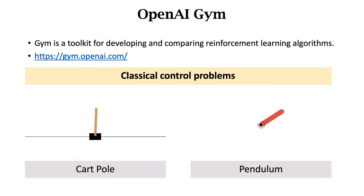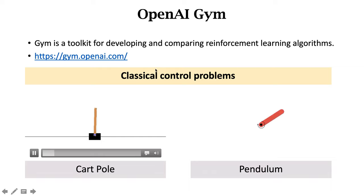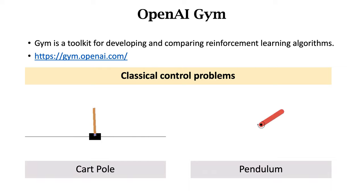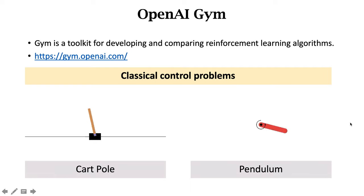Gym has several types of problems. The first and simplest are the classical control problems, such as cart pole and pendulum. In the cart pole environment, we give the cart a force towards left or right so that the pole can remain upright. Similarly, in pendulum, we give the pendulum a force so that it becomes upright.